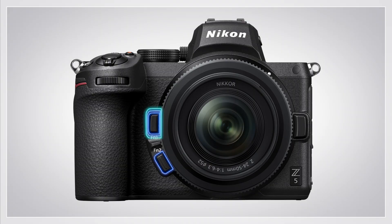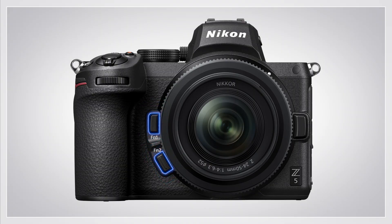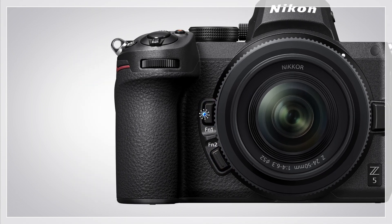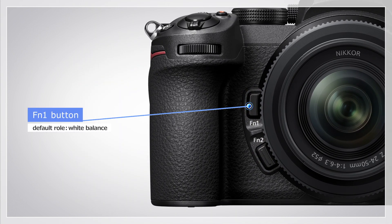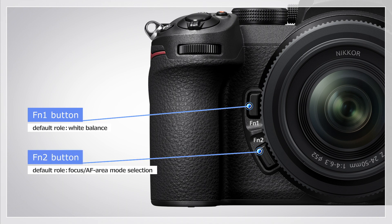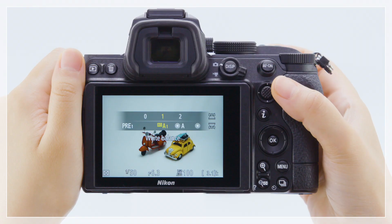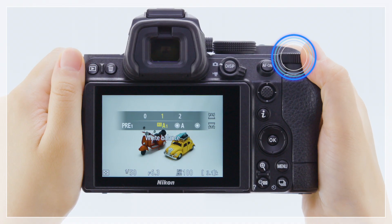You can choose the roles played by the FN1 and FN2 buttons. At default settings, the FN1 button is used for white balance and the FN2 button to choose the focus and AF area modes. Hold the button and rotate the command dials to choose a setting.